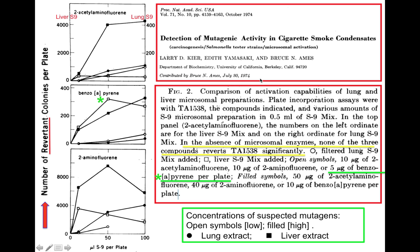Bruce Ames, while he was at UC Berkeley in the 1970s, devised this test. And this is an actual figure from his paper, figure number two. He was comparing the capabilities of lung and liver microsomes — the enzymes from lung and liver — to augment the process of revertent back to wild type. He started out with some salmonella, just like before, and mixed them with the suspected carcinogens and plated them on petri dishes and scored for the number of revertents. On the x-axis is the amount of enzymes from liver or lung that he added. The circular symbols are from lung extracts and the square symbols are from liver, and the square symbols all have higher values, so we'll focus on the liver extract results.